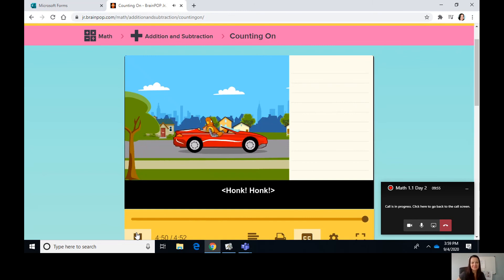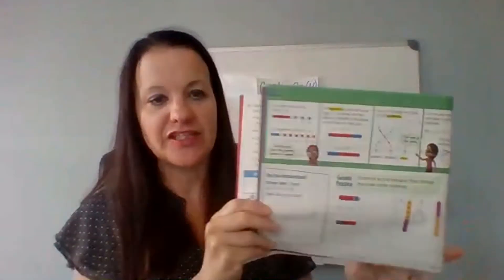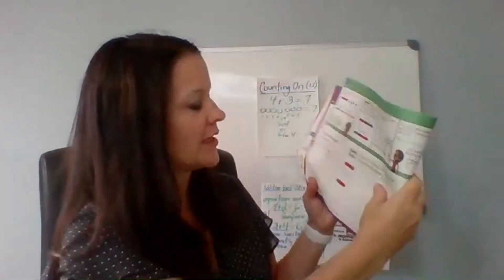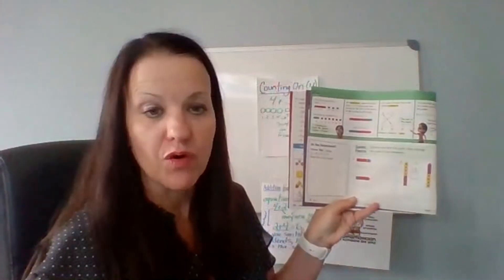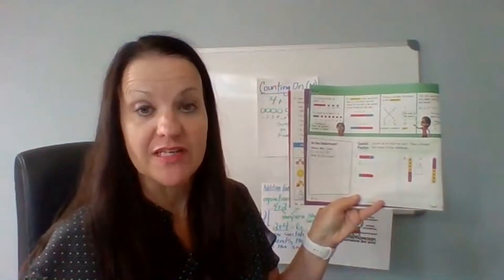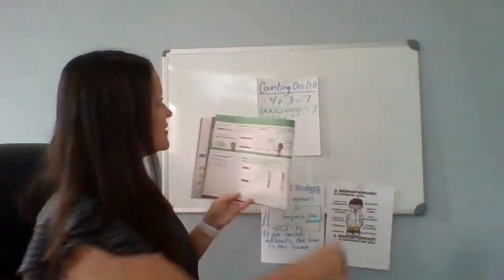All right friends! Now I would like you to turn to page six in your workbook — page six. Let's look at number one. We see three plus one equals four. The cubes are there for us and the addends are in different colors. Let's practice that together.